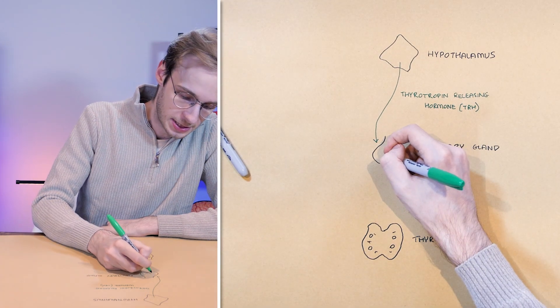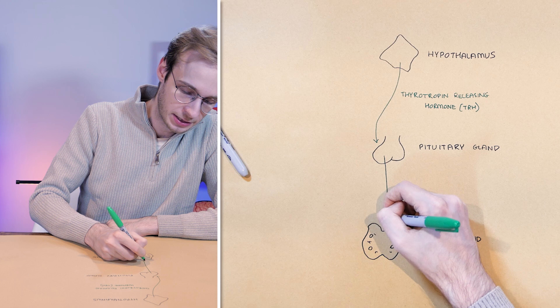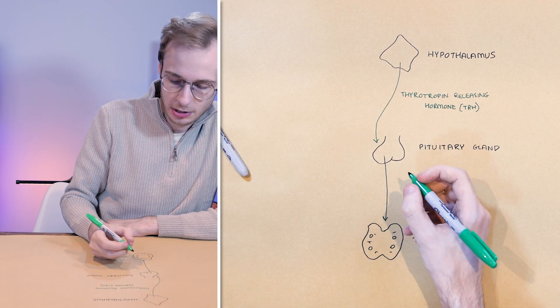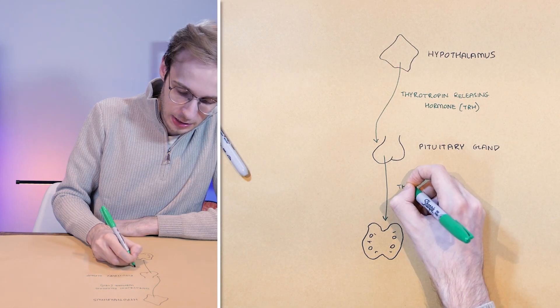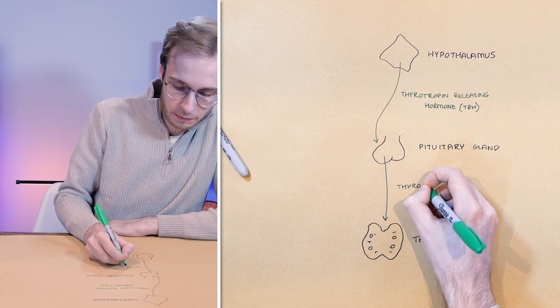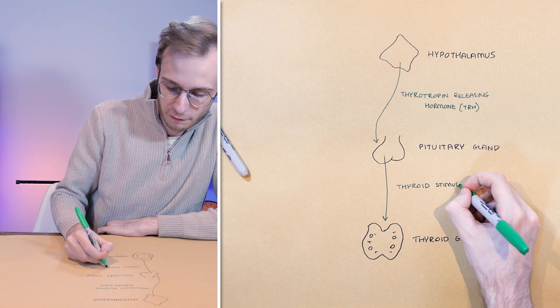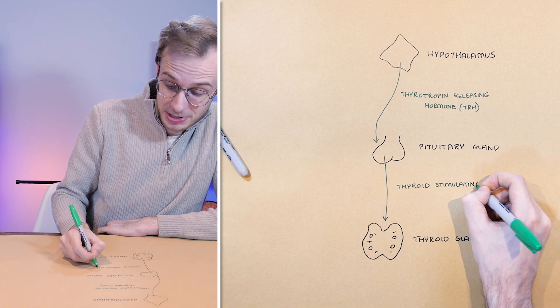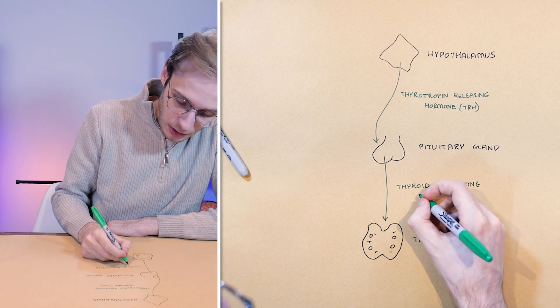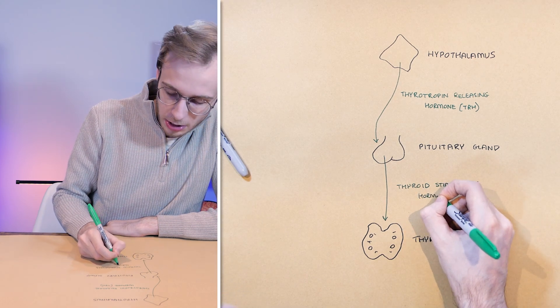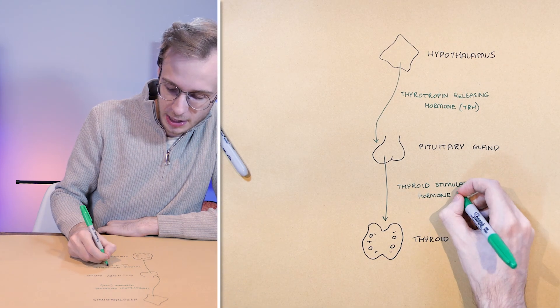which then in turn causes the anterior pituitary gland to release TSH or thyroid stimulating hormone, because this time it's actually acting on the thyroid gland itself. And it's going to be stimulating release of further hormones. So that's TSH.